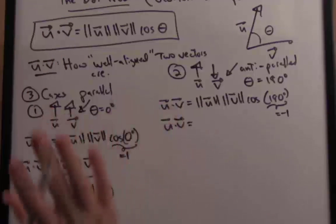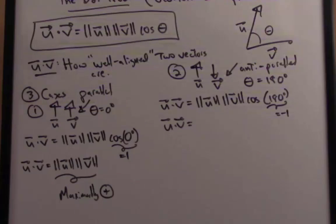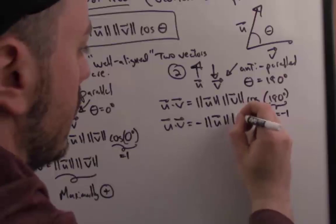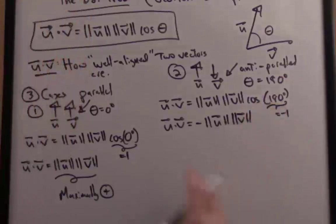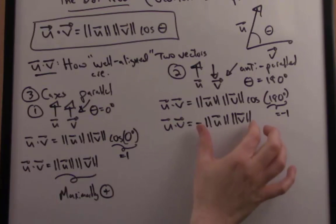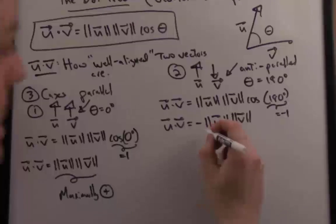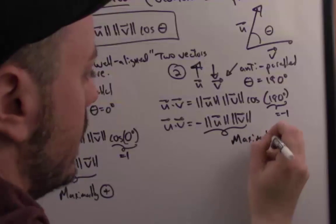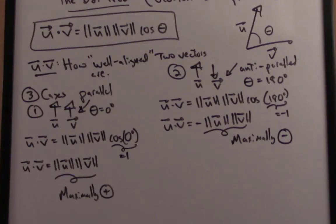Once again, cosine is bounded between negative one and one. So when the vectors are anti-parallel, the dot product is a very large negative number. Another way to put that is it's maximally negative. And this, once again, sheds light on the idea that the dot product is assessing how well aligned two vectors are. If they're totally out of alignment, they're going in opposite directions, we get a very large negative number.